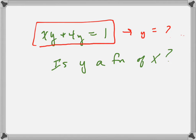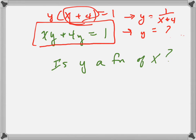So if I factor out a y, notice they both have a y in it, I would get that, which means, now let's solve this. Let's get rid of the x plus 4. So y equals 1 over x plus 4.